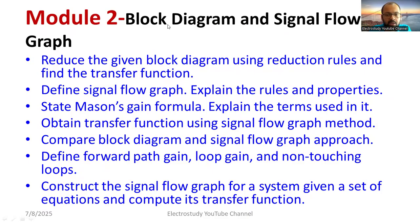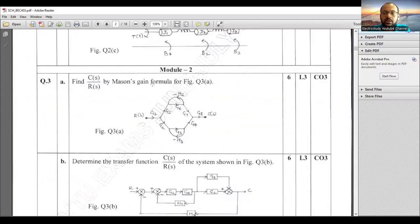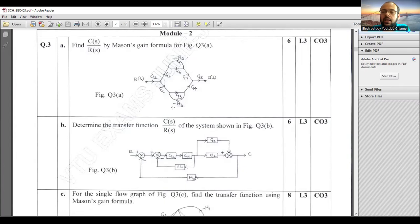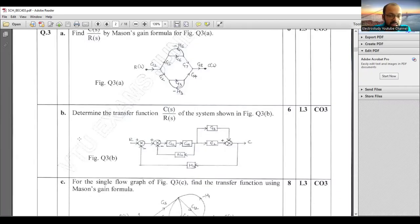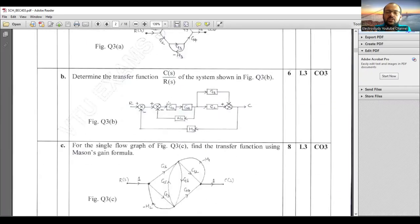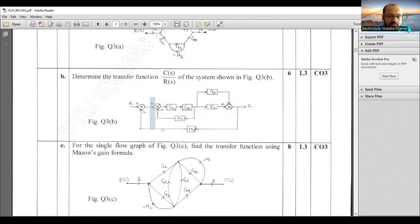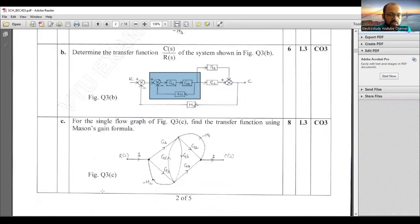For Module 2 questions, first write Mason's gain formula: T = (1/Δ) · Σ Pk·Δk, then explain each term — what is Δ, what is Pk, what is k. For block diagram reduction, mention each step and follow the 12 rules. For example, G2 and G4 in cascade, G3 and G2 in parallel. For negative feedback: G/(1+GH). For signal flow graph, apply Mason's gain formula directly.